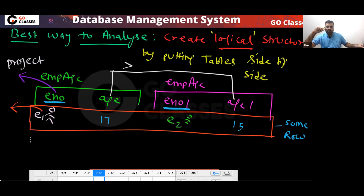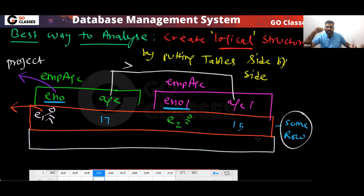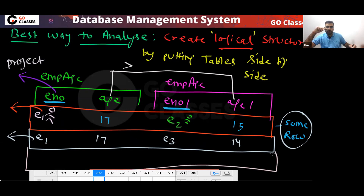You can have any number of rows satisfying the condition. An employee can be older than any number of people and still appear. In which situation will you NOT get an employee in the output? When there is no row where their age is greater than someone else's age — meaning there is no employee with an age less than theirs.